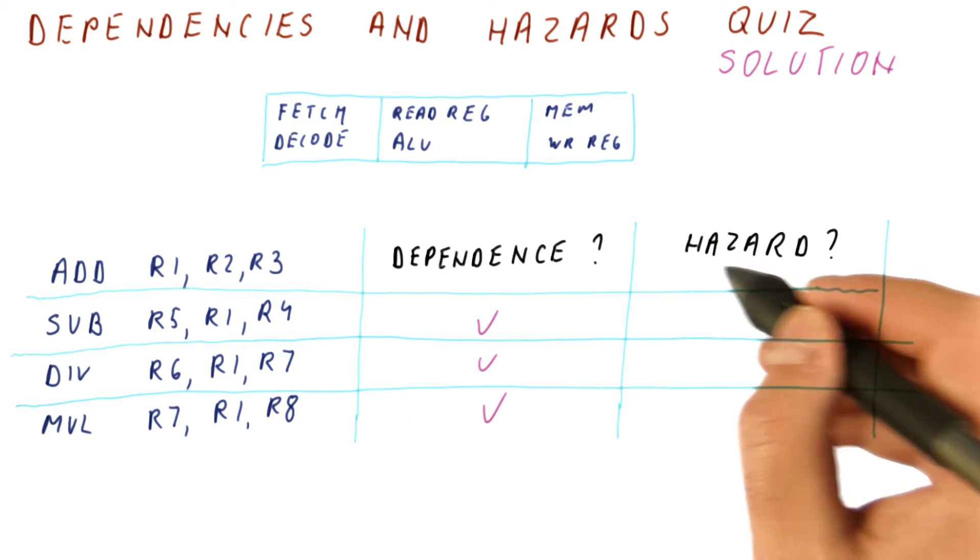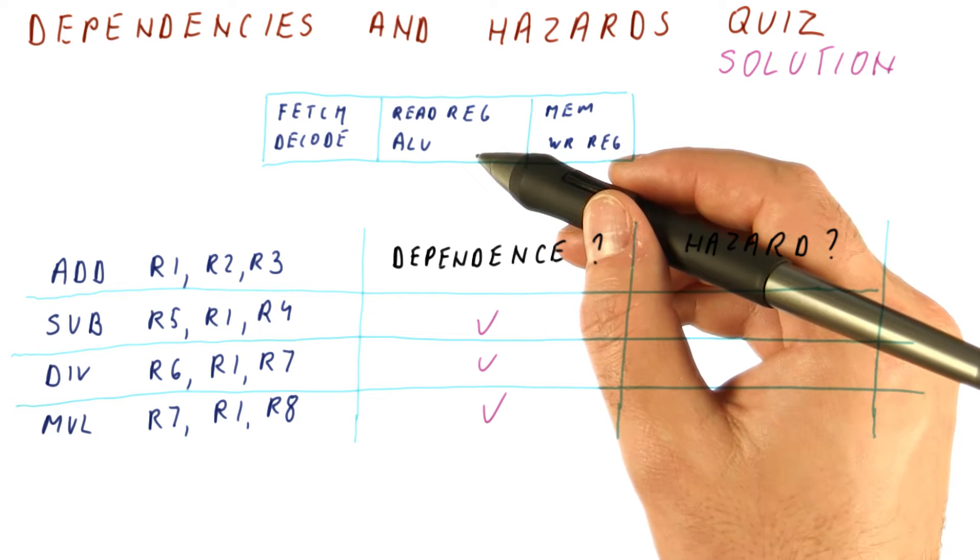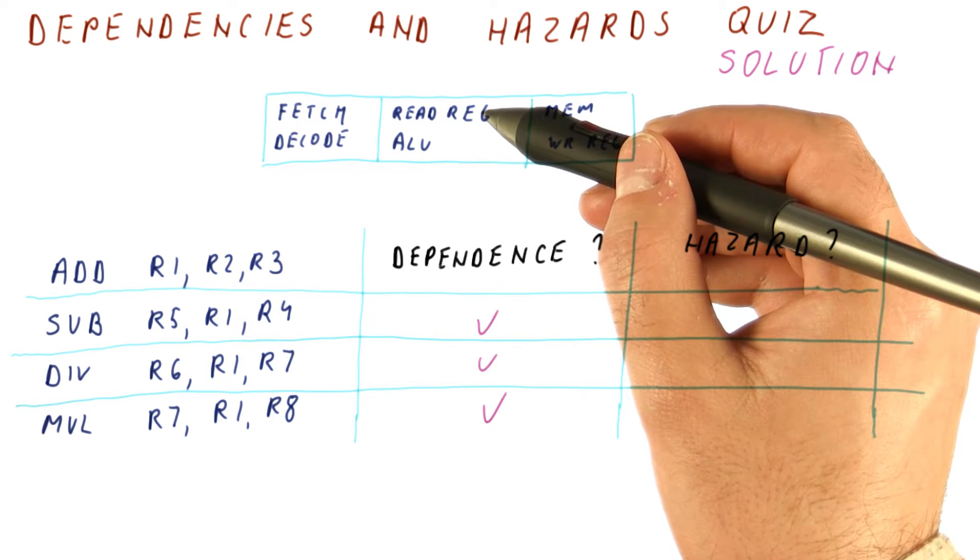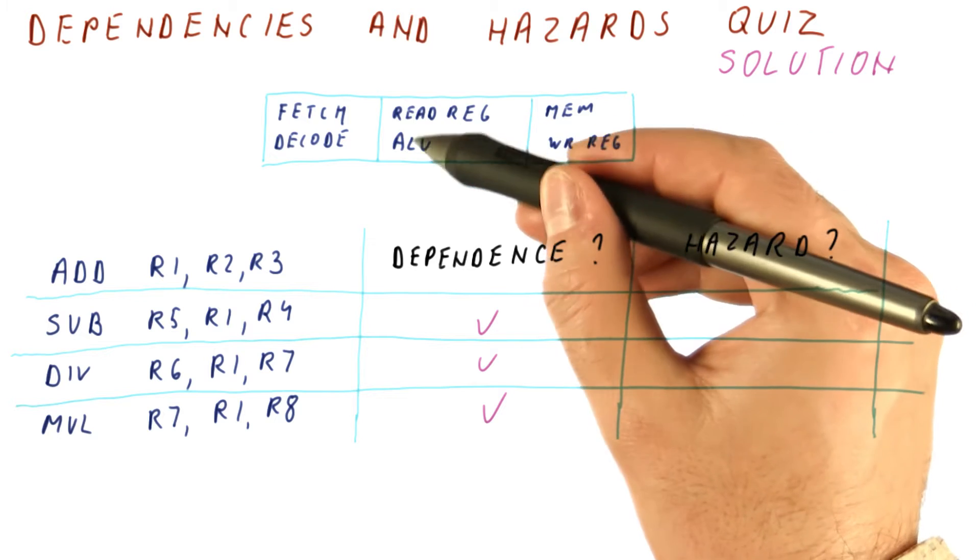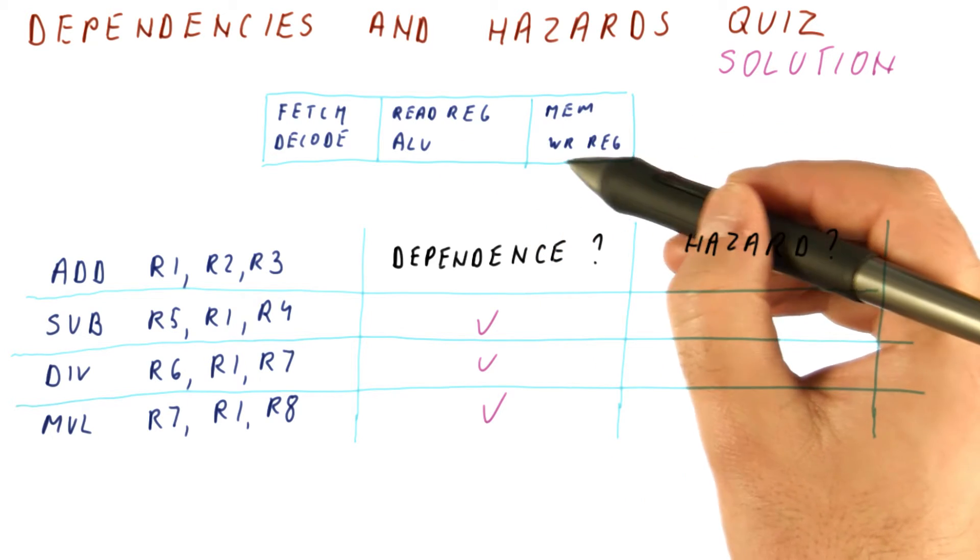Which of these dependencies are hazards does depend on the pipeline. To check whether the dependencies are hazards, we need to figure out when the read of the register happens and when it gets written.